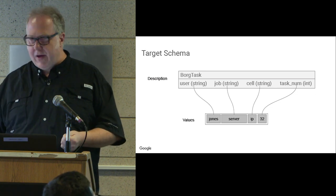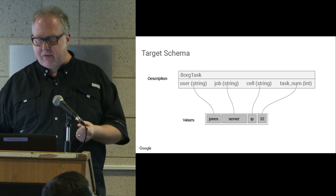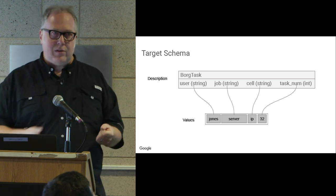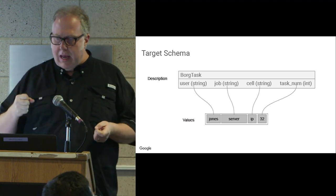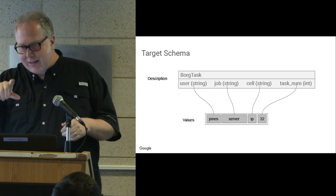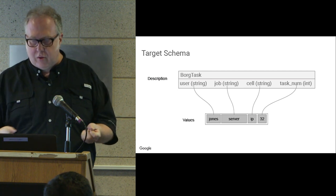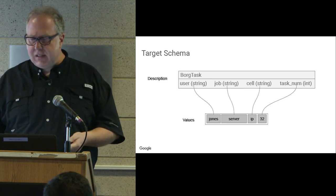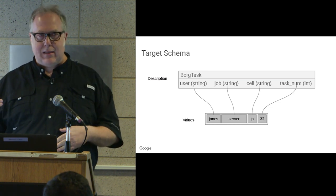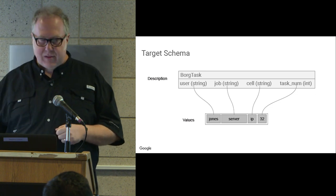There's a mechanism to fit the labels that jobs export — which identify themselves — into a fixed schema we call a target schema. Here's an example of a job running on our Borg task scheduling system. Borg is the internal predecessor of Kubernetes. Borg identifies by user, job name, cell — which is essentially data center — and task number. If you've started up a thousand tasks for a particular job, that's the number of the individual task. This is a very common target schema at Google, and it gives us an ordered, lexicographical space of names for targets.